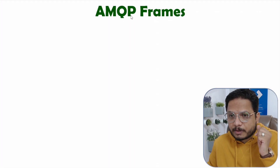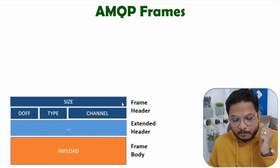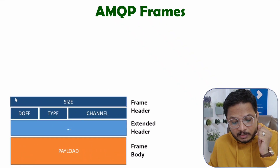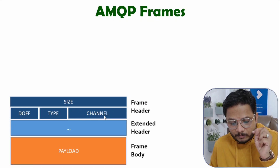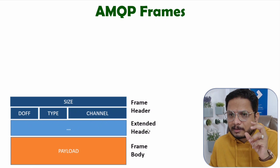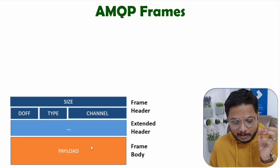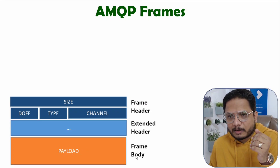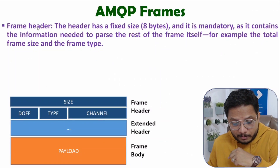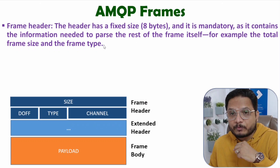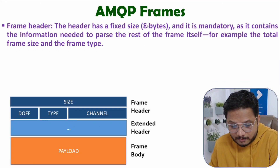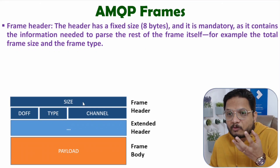Now let me explain the frame structure of AMQP protocol. The frame structure has a frame header, which is fixed, containing size and DOFF (also related to frame size), as well as the frame type and the channel it is forwarded to. There is also an extended header, which depends on the frame type, and then the payload — the frame body — which contains the content.